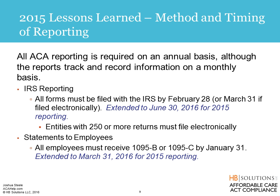2015 lessons learned on method and timing of reporting: the 1094-C and 1095-C are required ACA reports for large employers to file, required on an annual basis, although the reports track and record information on a monthly basis. With respect to the IRS filing, they have to be filed with the IRS by February 28th of each year, or March 31st if you're filing electronically. This past spring, they extended that to June 30th, 2016, giving many employers much-needed time. If you're an employer with 250 or more returns, you have to file electronically, which makes things even more difficult.